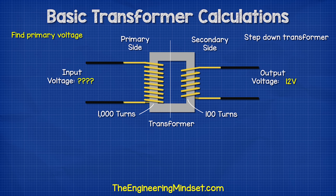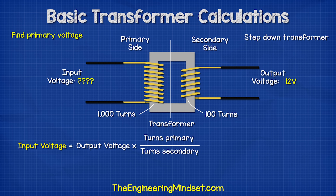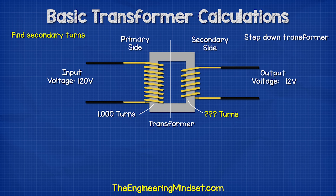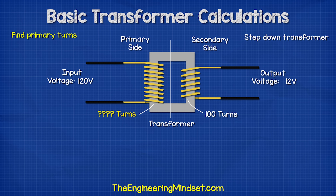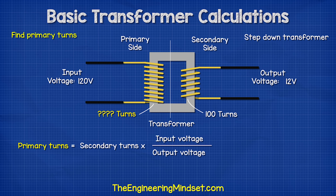What if we only knew the output voltage and the amount of turns? We could find the input voltage using this formula, and if we input the values, we get this answer. If we wanted to find the number of turns on the secondary side, and we knew the voltages and primary turns, then we could use this formula to get our answer. If we wanted to find the number of turns on the primary side, we could use this formula and this will give us the answer.